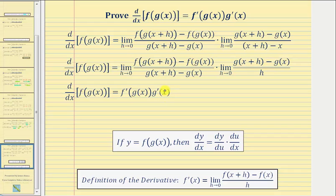And therefore we have our proof. The derivative of f of g of x with respect to x is equal to f prime of g of x times g prime of x. Or using Leibniz notation, we have dy/dx equals dy/du times du/dx. I hope you found this helpful.